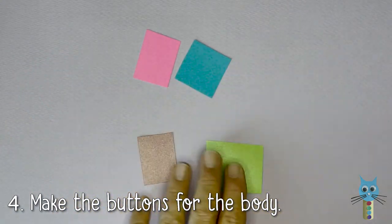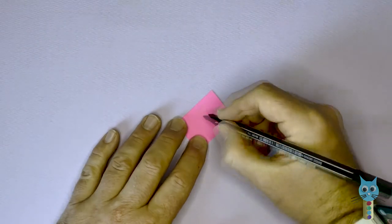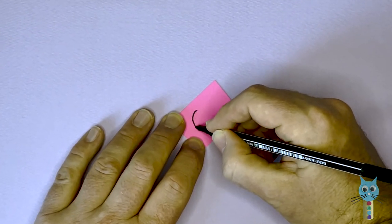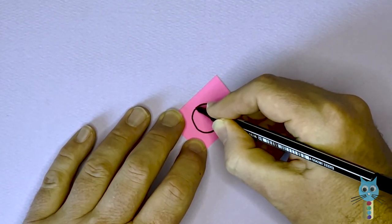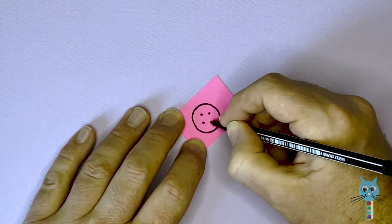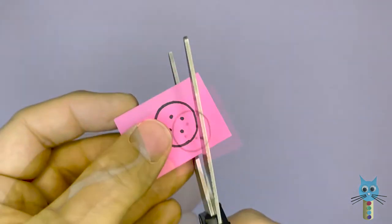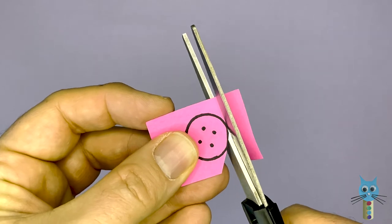Next, prepare some small pieces of colored paper or card. We're going to use these to draw some buttons. Just simply hand draw a circle using a black pen. Put some dots on the inside so it looks like a button. And then go ahead and cut out this button.